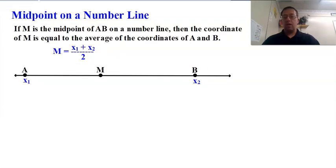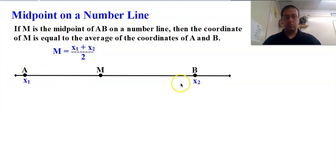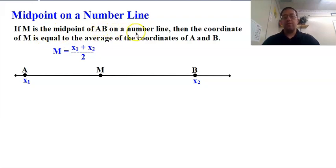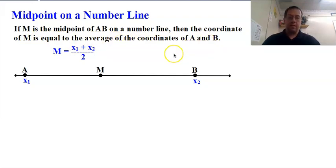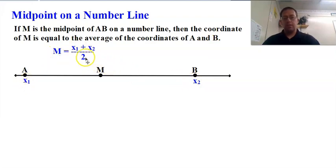What we're going to do now is find the midpoint on a number line — a one-dimensional coordinate system that just has one dimension, X. If M is the midpoint of segment AB on a number line, then the coordinate of M is equal to the average of the coordinates of A and B. With a formula, M = (X1 + X2) / 2, because that's how you find the average — you add the two up and divide by 2.